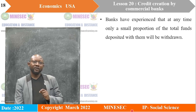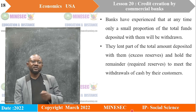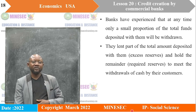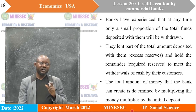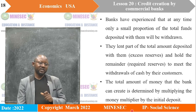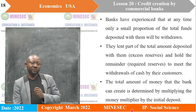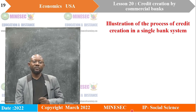Banks have experienced that at any time, only a small proportion of total funds deposited will be withdrawn. Because of that, they lend part of the total amount deposited — called excess reserves — and hold the remainder, called required reserves, to meet the routine daily demand for cash withdrawals. The total amount of money the bank can create is determined by multiplying the money multiplier by the initial deposit. The money multiplier is simply one divided by the cash ratio.